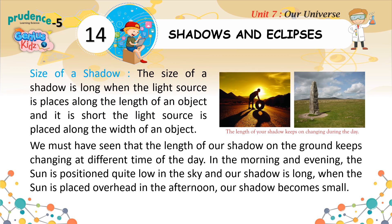The size of a shadow is long when the light source is placed along the length of an object, and it is short when the light source is placed along the width of an object. We must have seen that the length of our shadow on the ground keeps changing at different times of the day. In the morning and evening, the sun is positioned quite low in the sky and our shadow is long. When the sun is overhead in the afternoon, our shadow becomes small.